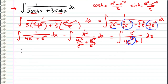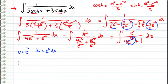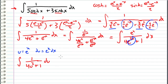Now we use u-substitution on e^x. Let u = e^x, therefore du = e^x dx. Substituting in, we get the integral of 1 / (4u² + 1) du. I'll rewrite this as the integral of 1 / ((2u)² + 1) du.